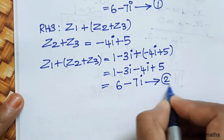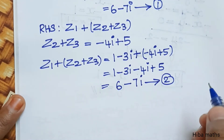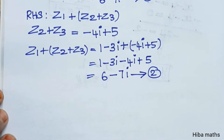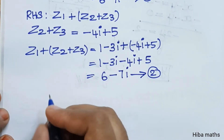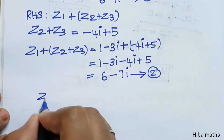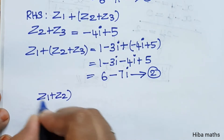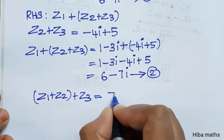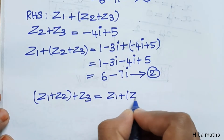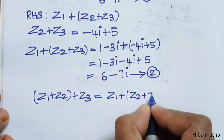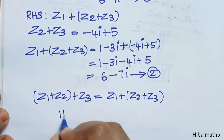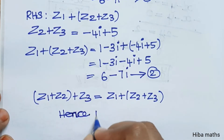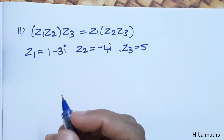Comparing the first equation and second equation, both are equal. Therefore z1 plus z2 plus z3 is equal to z1 plus z2 plus z3. Hence proved. Now the second subdivision.